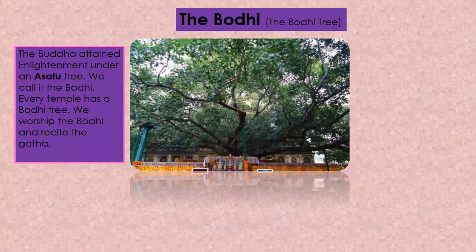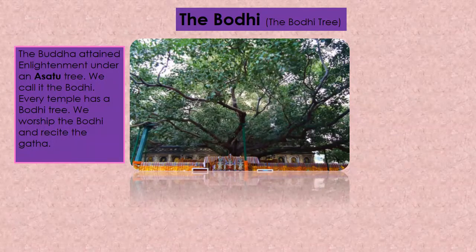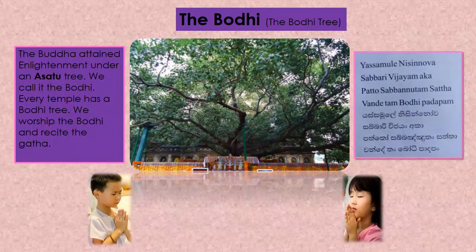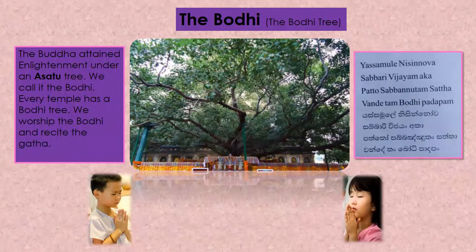Next, the Bodhi. The Buddha attained enlightenment under an Asattu tree — we call it the Bodhi. Every temple has a Bodhi tree. We worship the Bodhi and recite the gatha: Yasmule nisinova sabbhari vijayang akar patto sabbhang yutang satta vandetang bodhi padha pang.